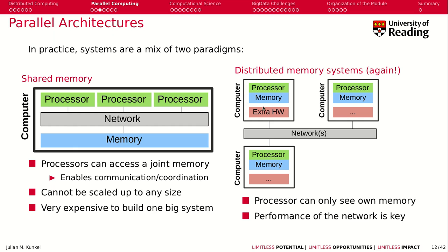The second architecture is the distributed memory system, where processors can only see their own memory. When talking about performance of parallel computation, you need a very performant network to allow this kind of coordinated application to run simulations.